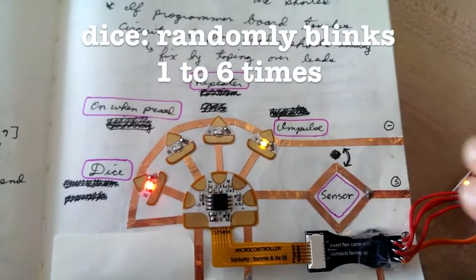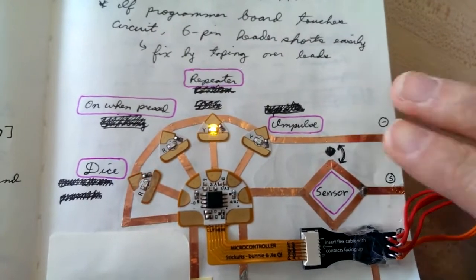Starting from the left, we have DICE, which blinks the light one to six times at random.